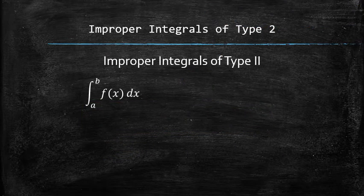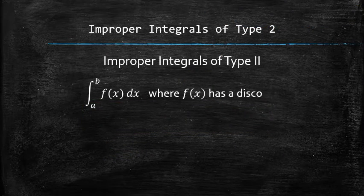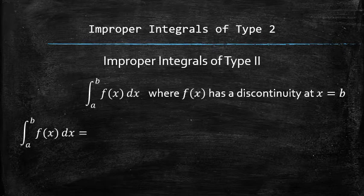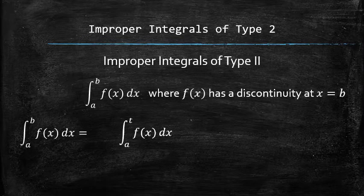Let's consider an integral of a function with the discontinuity at the upper limit. Normally, we would have found the antiderivative and plugged the limits of integration. But since the original function is not defined at b, we can't plug b into the function's antiderivative. Therefore, we replace b with a new variable, let's say t, and set up a limit with t approaching b from the left.